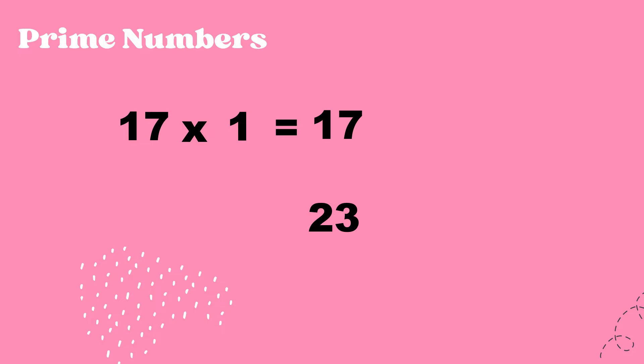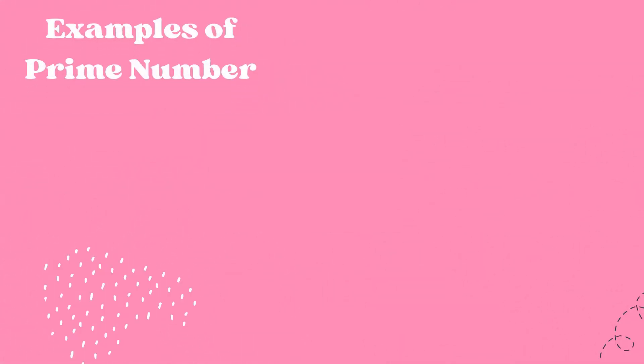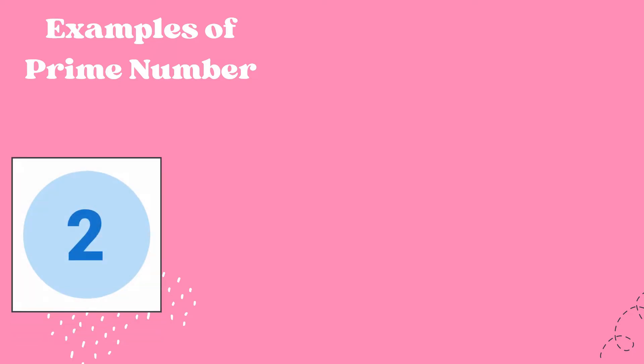Another example: 23. What are the factors of 23? Twenty-three times one is equal to 23. There are only two factors for 17 and 23, therefore 17 and 23 are prime numbers. These are some of the examples of prime numbers less than 100.